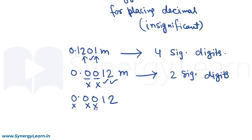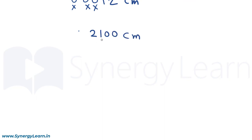So these zeros which come before the first nonzero digit in a measurement are insignificant. Now consider a measurement like 2100 — it is quite difficult to count the number of significant digits, because the zeros after the last nonzero digit either have come from measurement or have been put there for placing the decimal. So we cannot certainly say whether these zeros are significant or not.